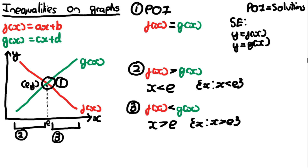This is the key point of this section of the video. The specification specifically states this theory — you need to understand what inequalities represent graphically. They may give you a graph with a point of intersection and ask you to find inequalities from it. It's a useful method because it's easy to read the graph, and using the point of intersection you can solve these questions easily.